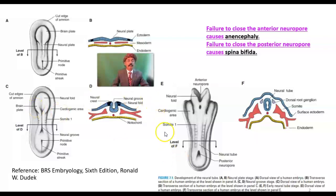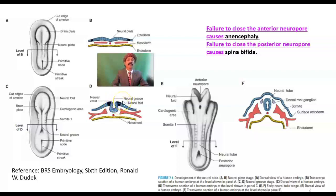So we have the notochord. From the notochord, the neural plate develops from the surface ectoderm and becomes neural ectoderm. Then it folds, leading to the neural groove and neural tube. The upper part of the neural fold separates out to give the neural crest cells. Migration begins even before neural tube formation is complete. These neural crest cells start migrating in many directions — to the cranium, to the trunk, to the skin, to the wall of the intestine.